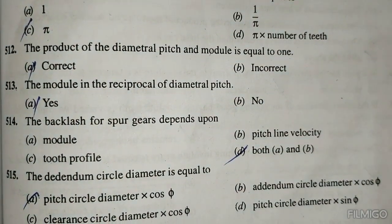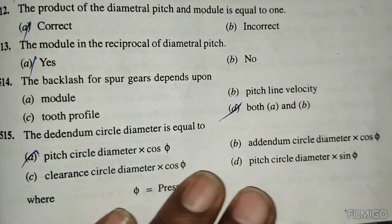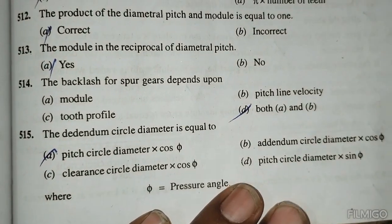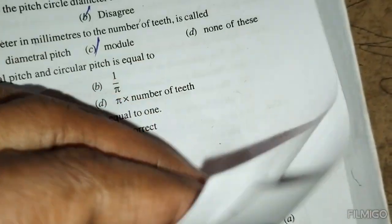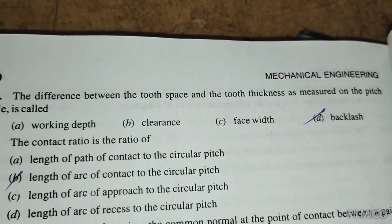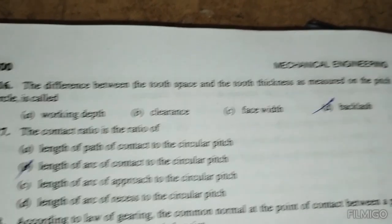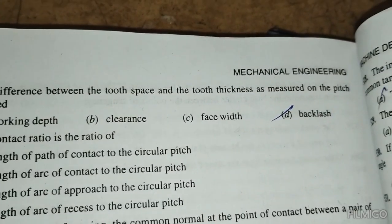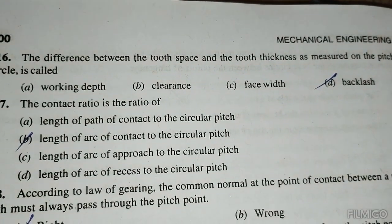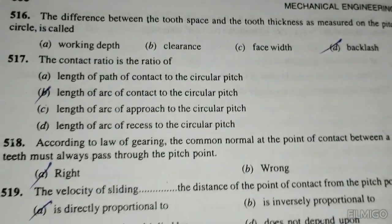The backlash for a spur gear depends upon both module and pitch. The dedendum circle diameter is equal to pitch circle diameter minus twice the dedendum. The difference between the tooth space and tooth thickness measured on the pitch circle is called backlash. The contact ratio is the ratio of the length of arc of contact to the circular pitch.